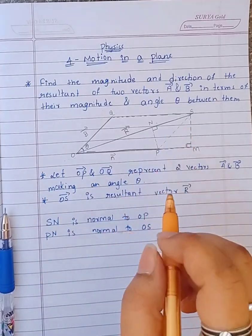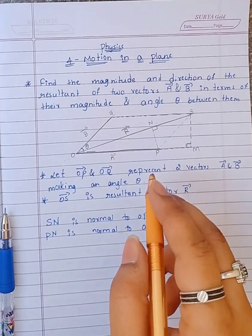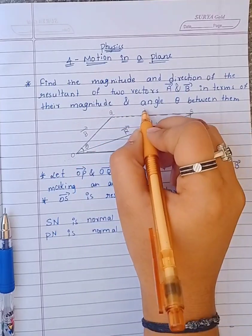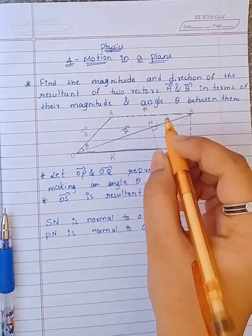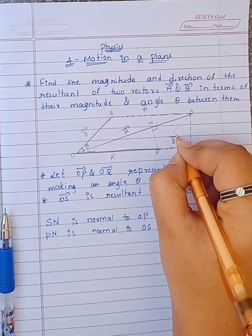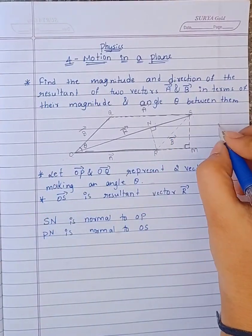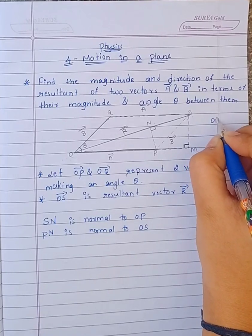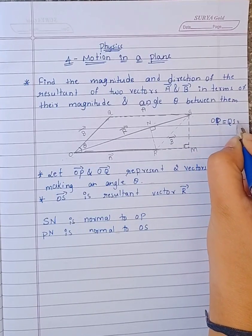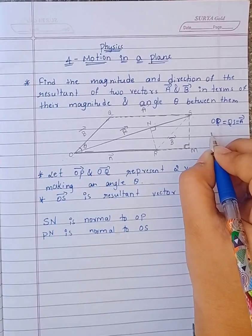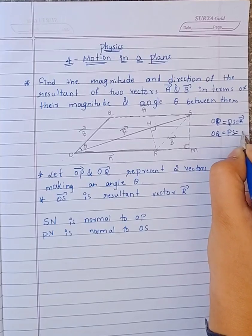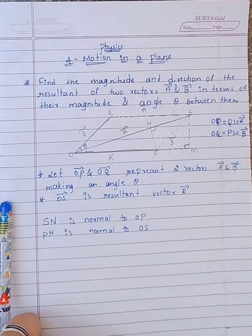In a parallelogram, opposite sides are equal and parallel. Therefore OP equals OQ, which is A, and OQ equals PS, which is B. That is, OP equals QS, which equals vector B.